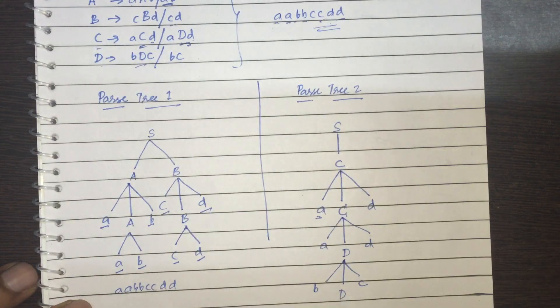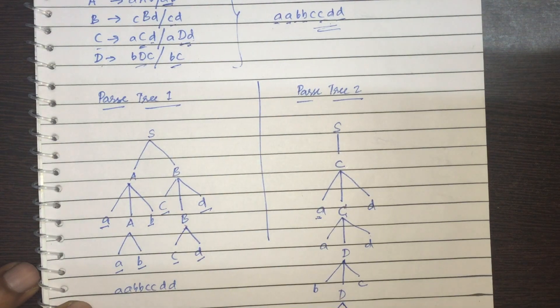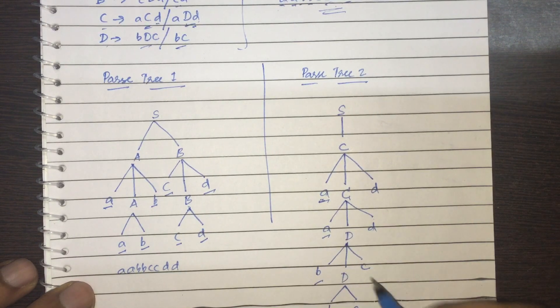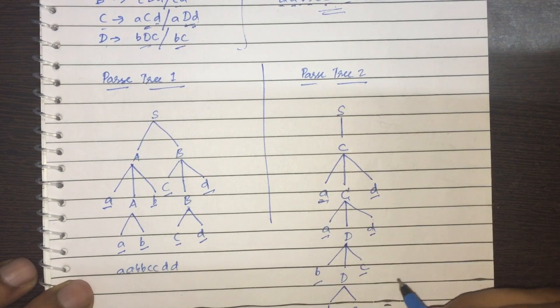So again, I have D and then I use this production. I get what? B, C. So what did I get here? I got AA, B, B, C, C, D, D. I got it.